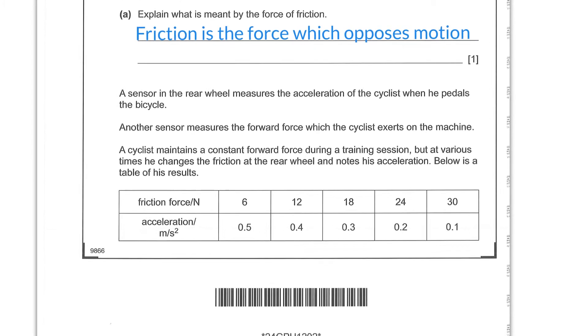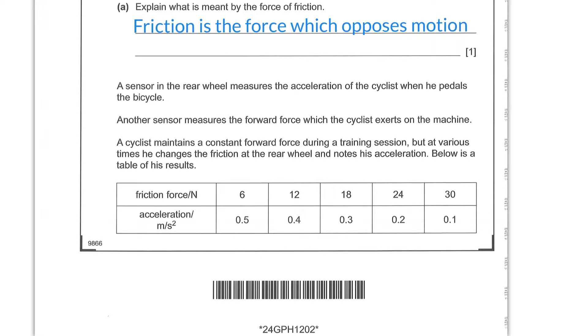A sensor in the rear wheel measures the acceleration of the cyclist when he pedals the bicycle. Another sensor measures the forward force which the cyclist exerts on the machine. A cyclist maintains a constant forward force during the training session but at various times he changes the friction at the rear wheel and notes his acceleration. Below is a table of his results. So we've got a constant force of these values and we have an acceleration of these values. So we've got a force related to an acceleration here.